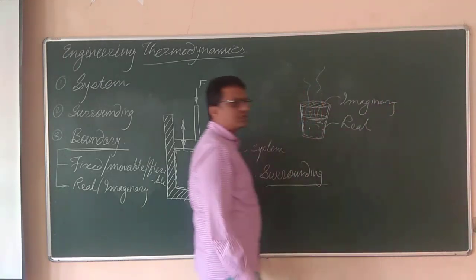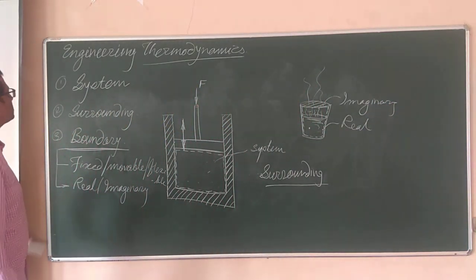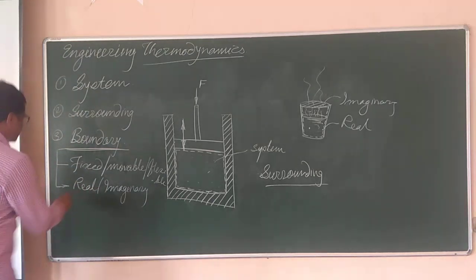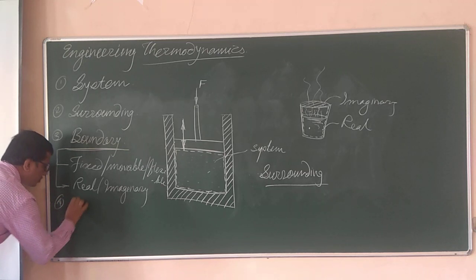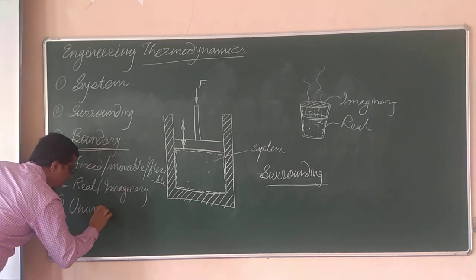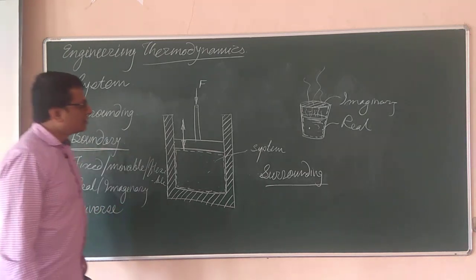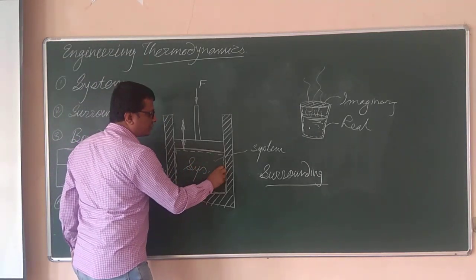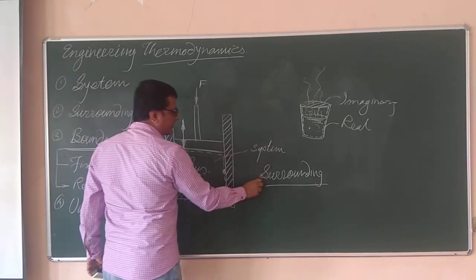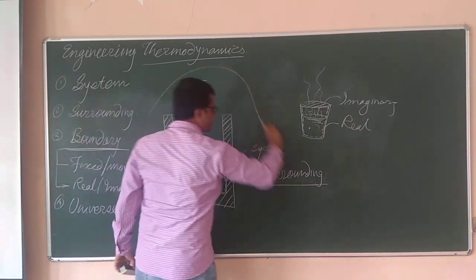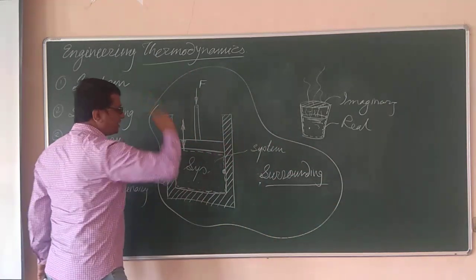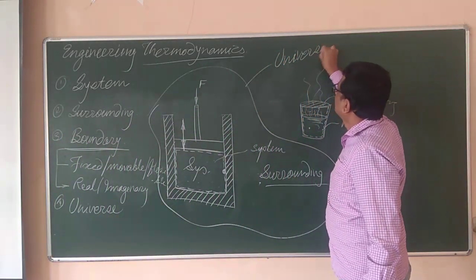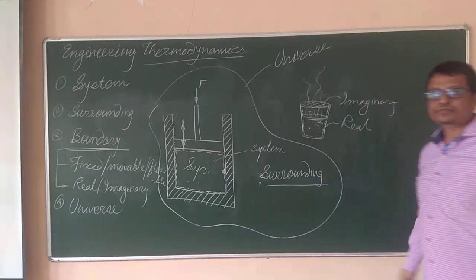One more nomenclature remaining — universe. Universe means the system plus the surrounding plus the boundary together form the universe.